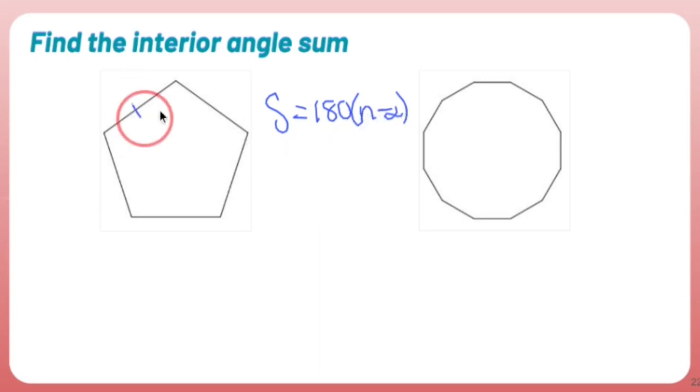So you are 1, 2, 3, 4, 5 sides. So N is going to be 5.